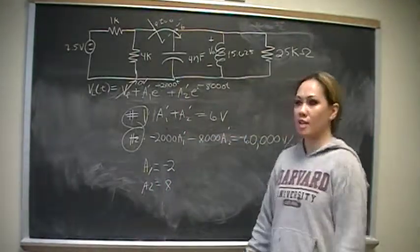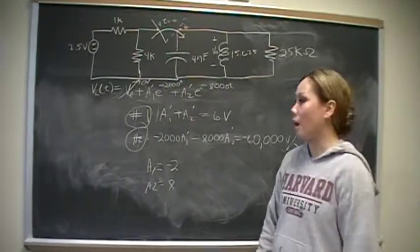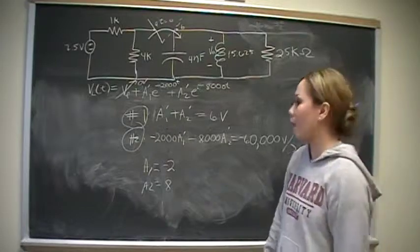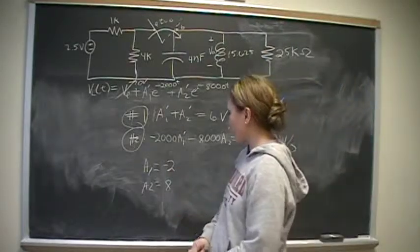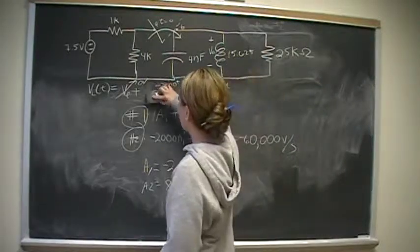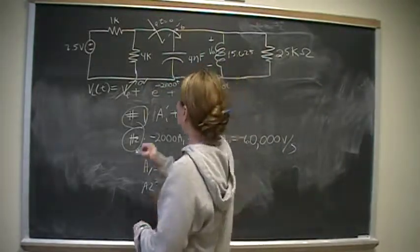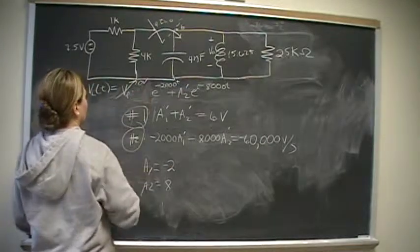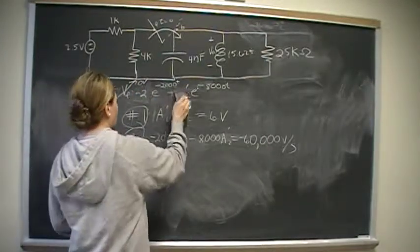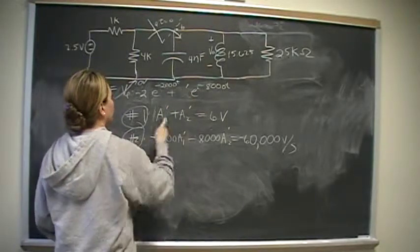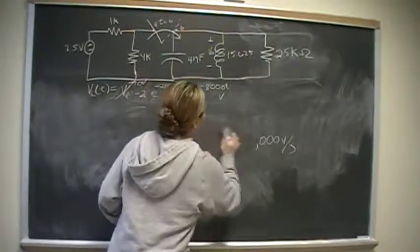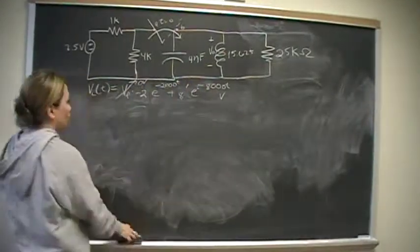If you guys don't have the math skills, you can let me know. I'll work it out. But if you're in electrical engineering, you should really have that level of math. So now we have everything. We have A1 prime, that is negative 2. We have A2 prime, which is positive 8. And that is the answer to the problem.